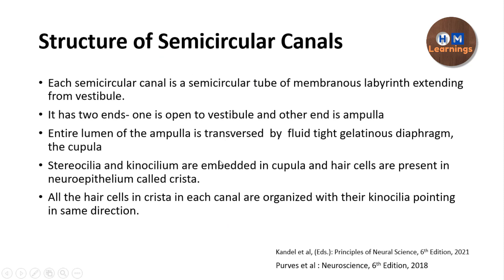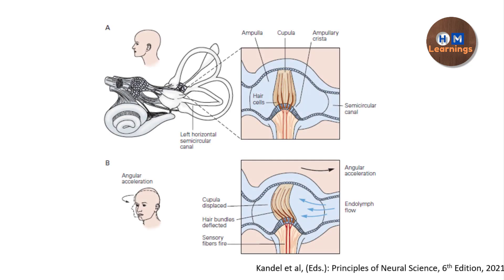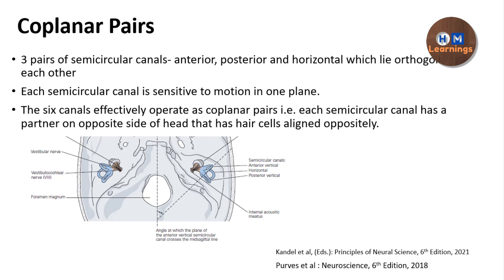The difference between the utricle and saccule organs and the semicircular canal is that in the utricle and saccule, we have the concept of morphological polarization, where the orientation of the kinocilium is different. But in one semicircular canal, all the kinocilia are pointing in a single direction — only one direction. That is why each semicircular canal is responsive to the motion of the head in one particular plane. There are three pairs of semicircular canals, and their naming is based on the plane in which they respond maximally.